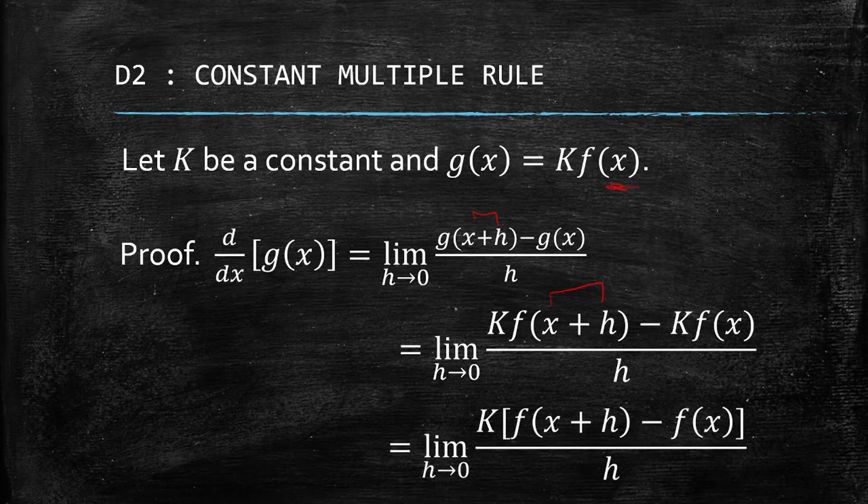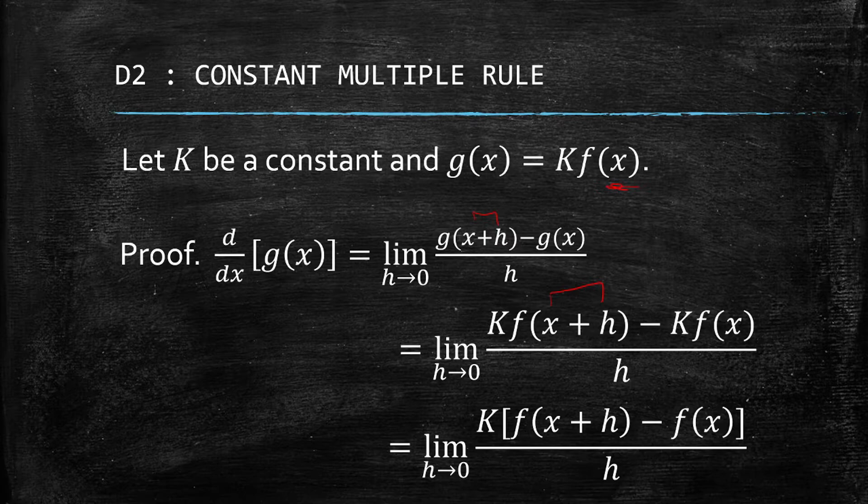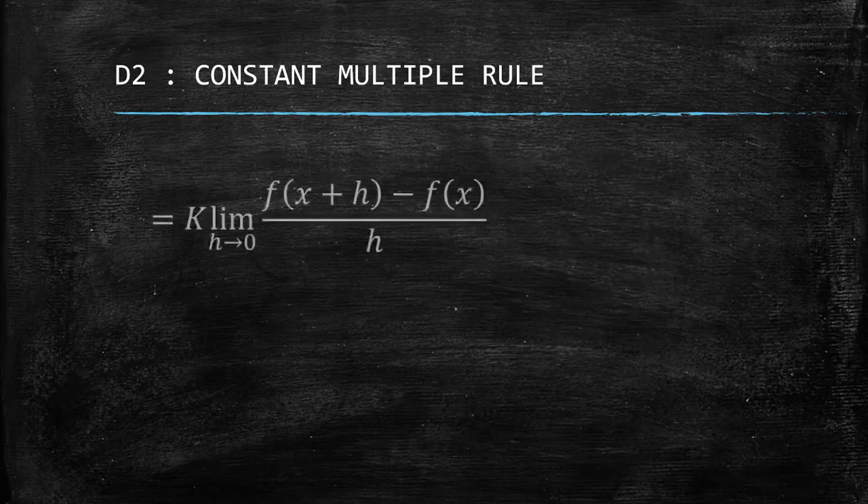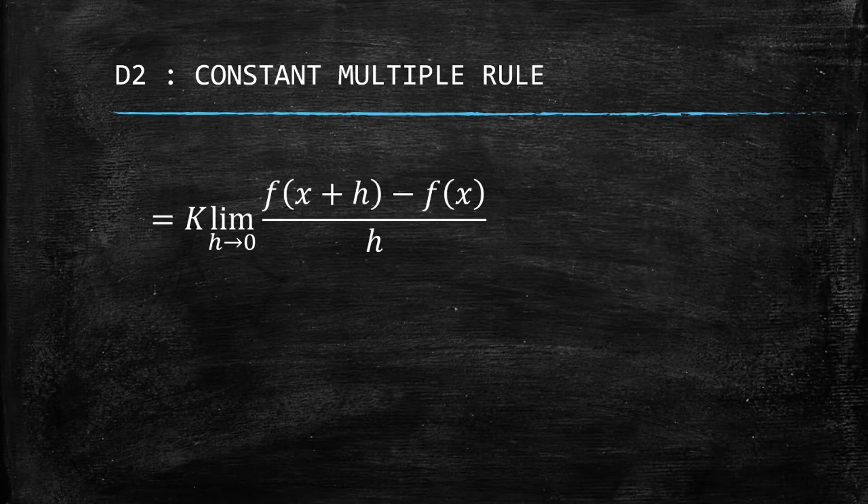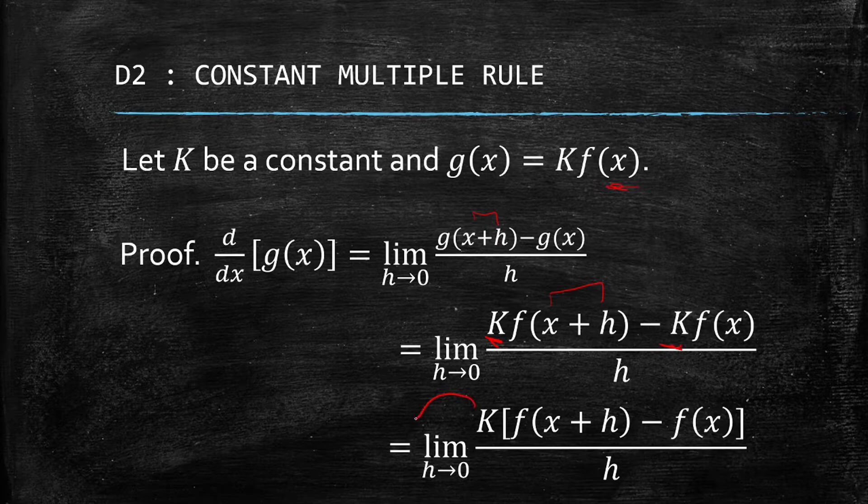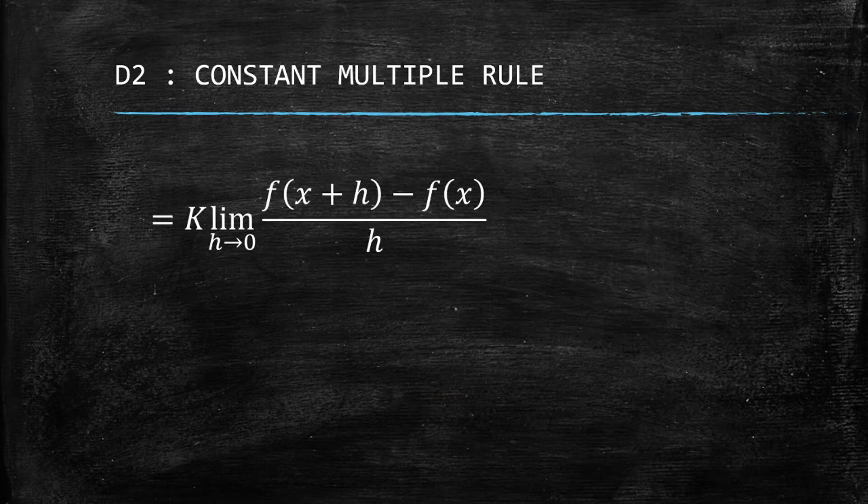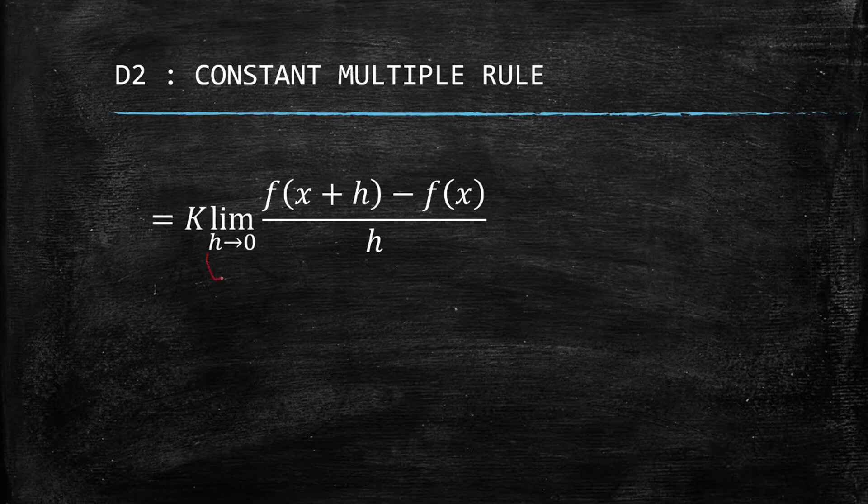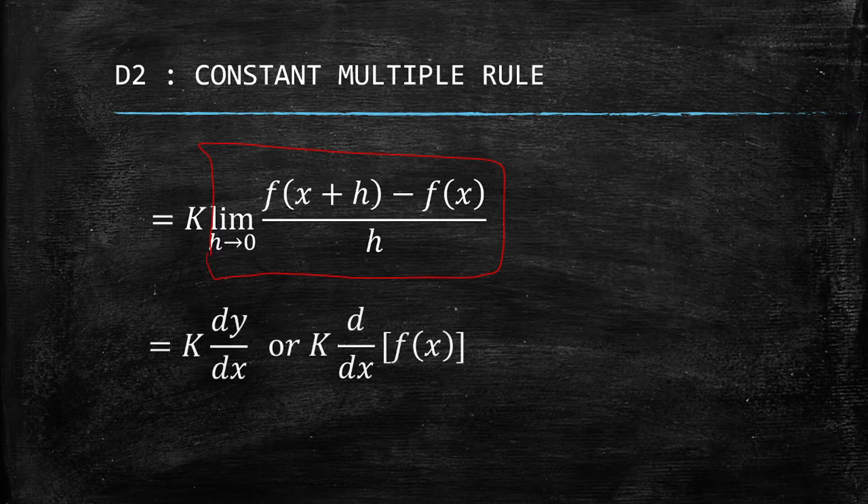Then we factored out K because it's the common factor. Then, using the laws of limits—take note that in the laws of limits we can actually transfer K outside of the limit—we now have the definition of a derivative.